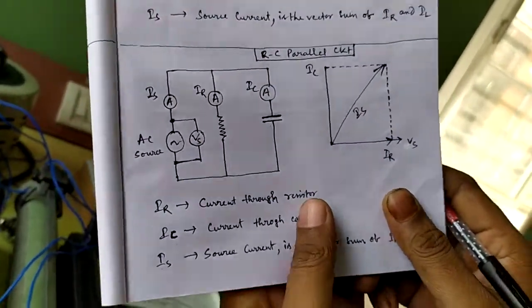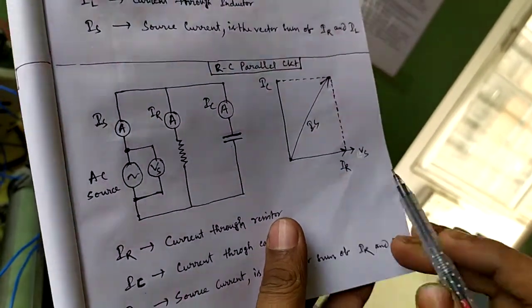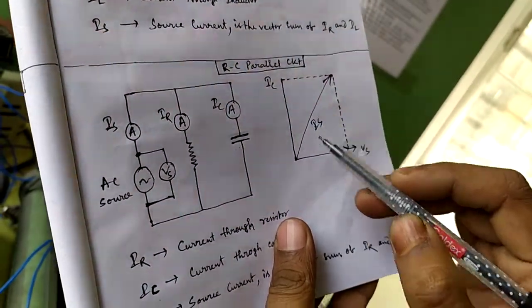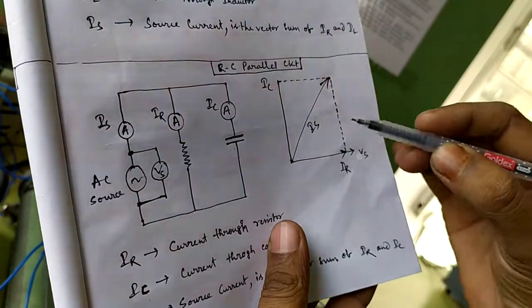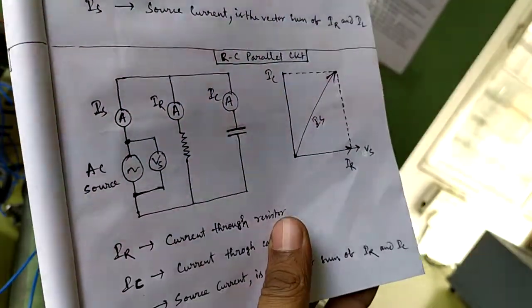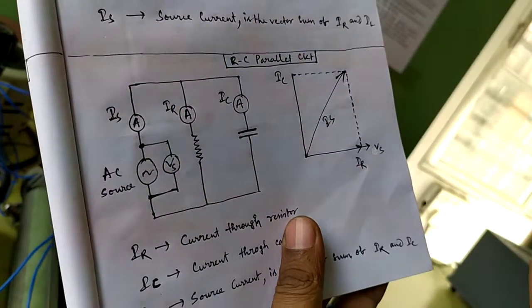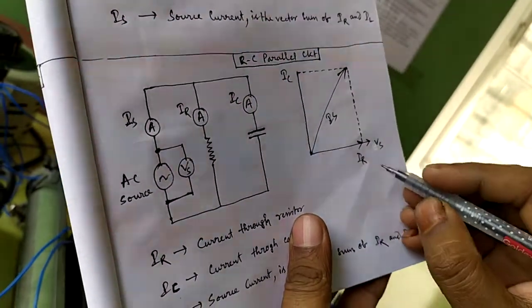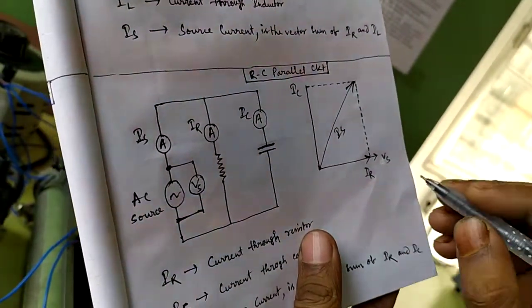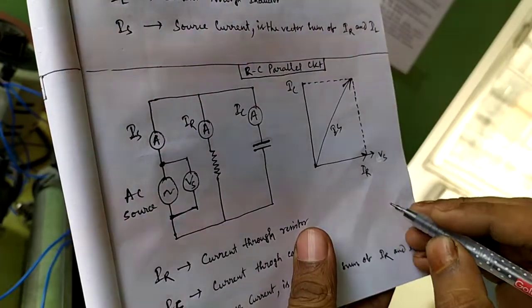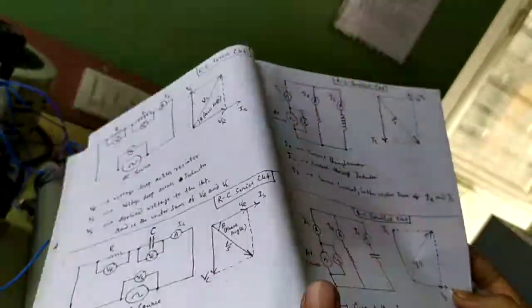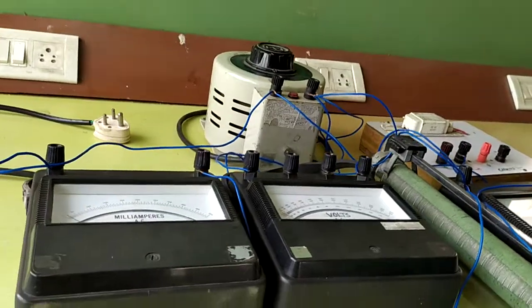In the phasor diagram for the RC parallel circuit, Ir and Vs are in phase, Ic is 90 degrees leading, and Is is the resultant of Ir and Ic. You can calculate Is as the square root of Ir squared plus Ic squared. Now we move to the completed physical circuit.